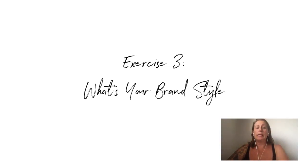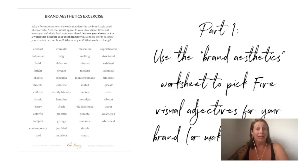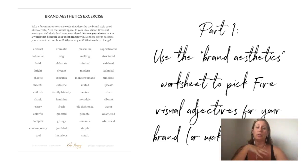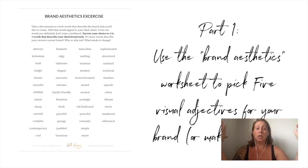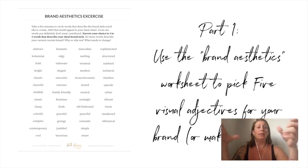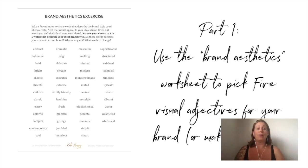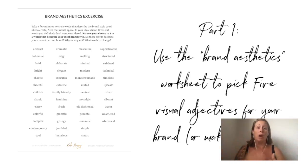Your third exercise is what's your brand style. Part one is very similar to what you just did with your five adjectives for what people say about you — that was your personality words. In this one, you're going to pick your aesthetic words: five visual adjectives. You have a handout, and you can also pick your own.